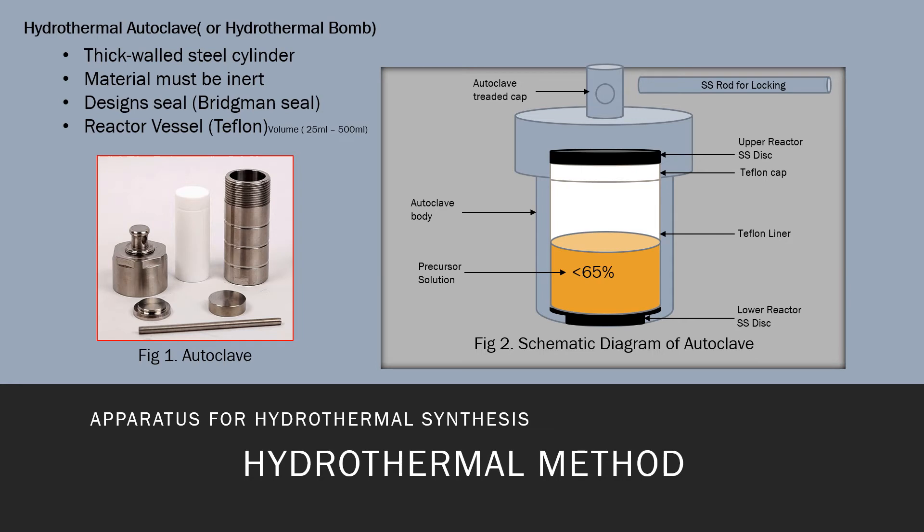We have the crystallization vessels. The apparatus used for hydrothermal synthesis, as you can see in figure one, shows the actual image of the autoclave, and also the schematic diagram of autoclave in figure two. As you can see, the autoclave body must be made of steel cylinder.